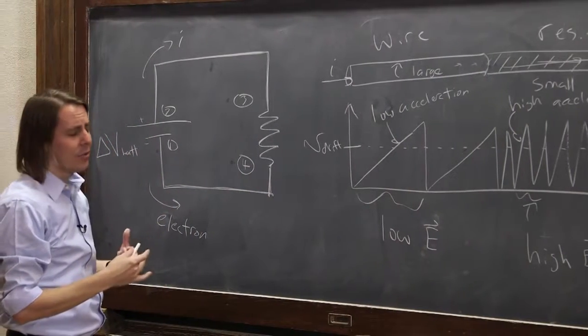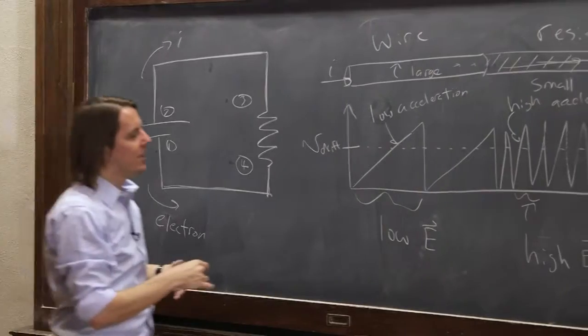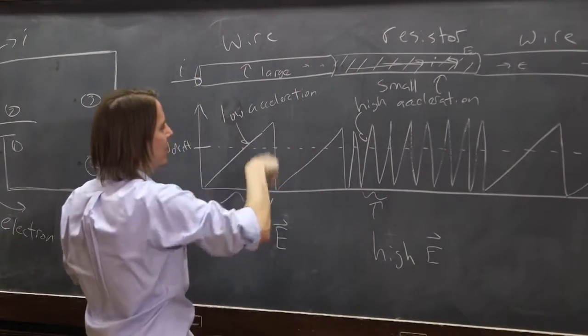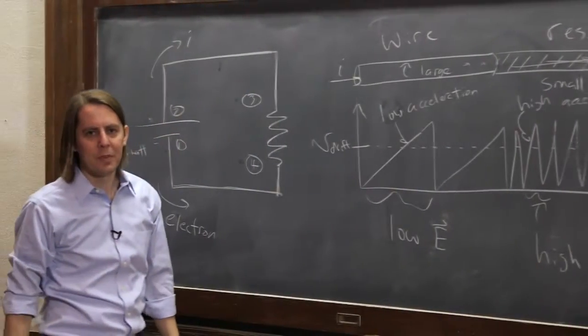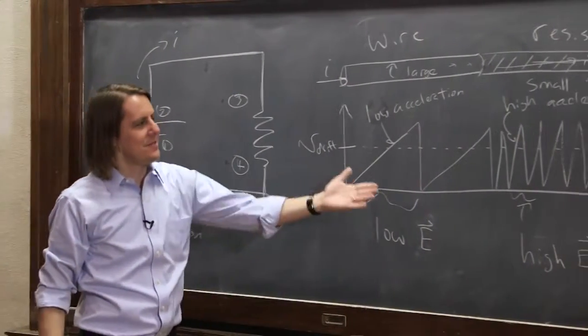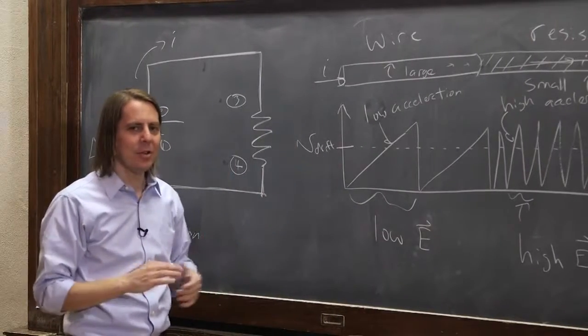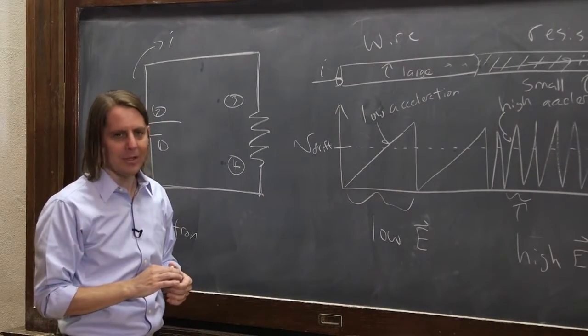So if you want to think of it in terms of Drude, you can think that, well, basically, you don't need a big potential drop because you don't need a big E field because the collisions are pretty infrequent. You don't necessarily need this to understand a circuit. But you can really go that far to really understand microscopically what's happening in these circuits.